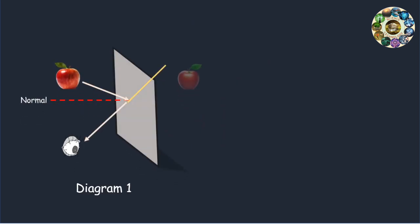In diagram 1, the eye is sighting along a line at a position above the actual image location. For light from the object to reflect off the mirror and travel to the eye, the light would have to reflect in such a way that the angle of incidence is less than the angle of reflection.